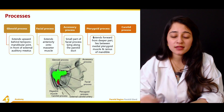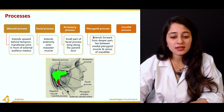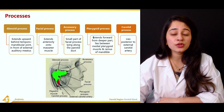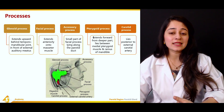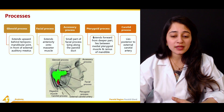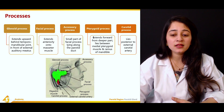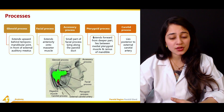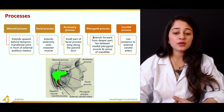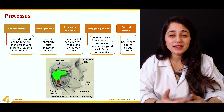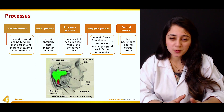The last process is the carotid process, which lies posterior to the external carotid artery. The red structure visible here is the external carotid artery, and behind it we have the carotid process.